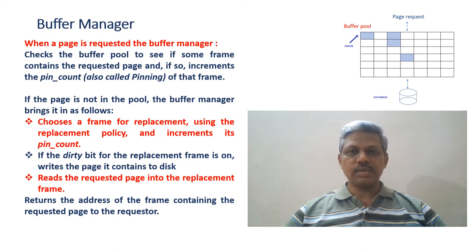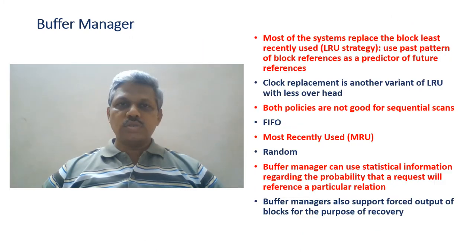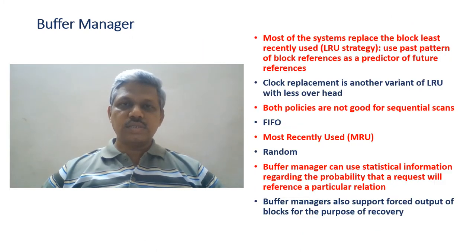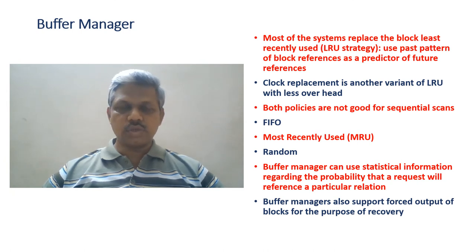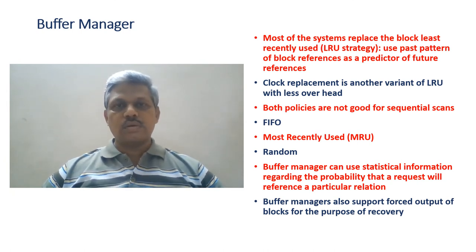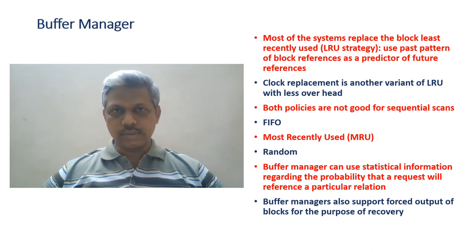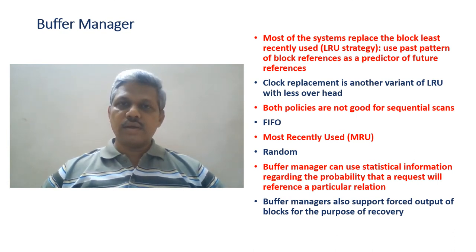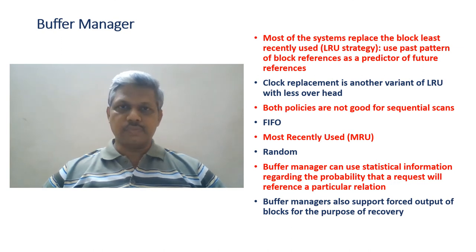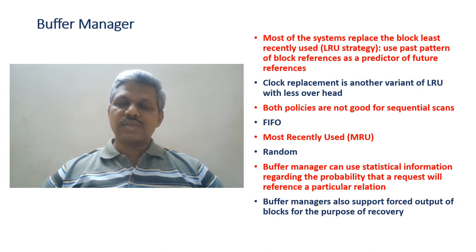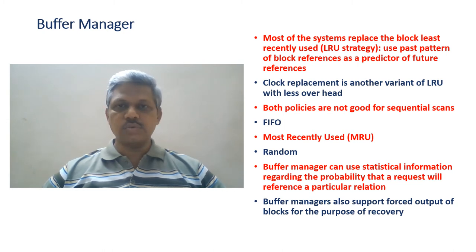Most systems use the least recently used strategy, or LRU strategy, in which past usage of frames acts as a future reference. In practice, a queue of pointers to frames is maintained. Whenever a frame is freed by the Buffer Manager, its address is added to the end of the queue, and whenever there is a request, the head of the queue is allocated — this is how the LRU policy is maintained.